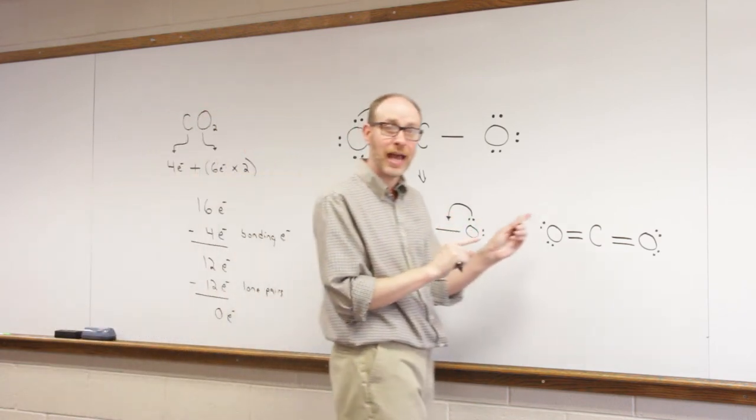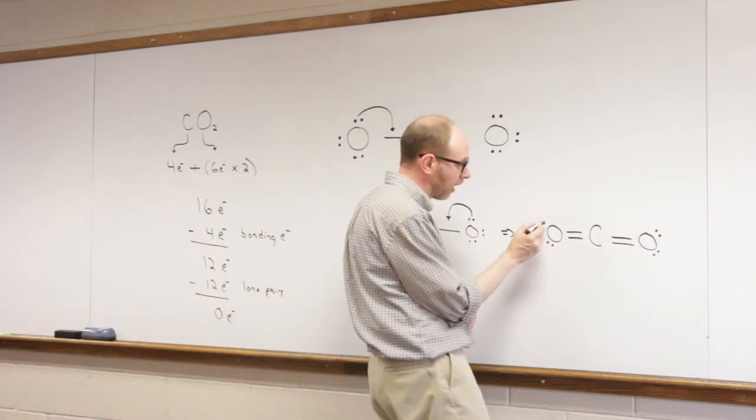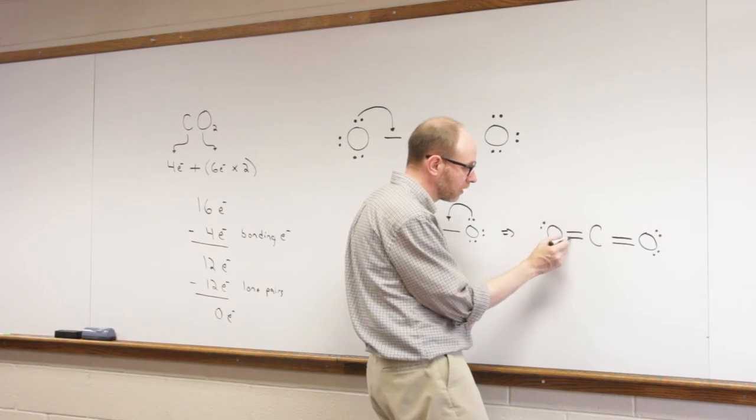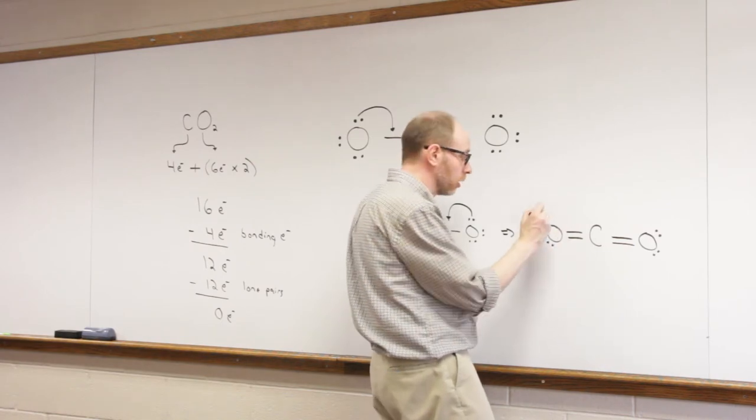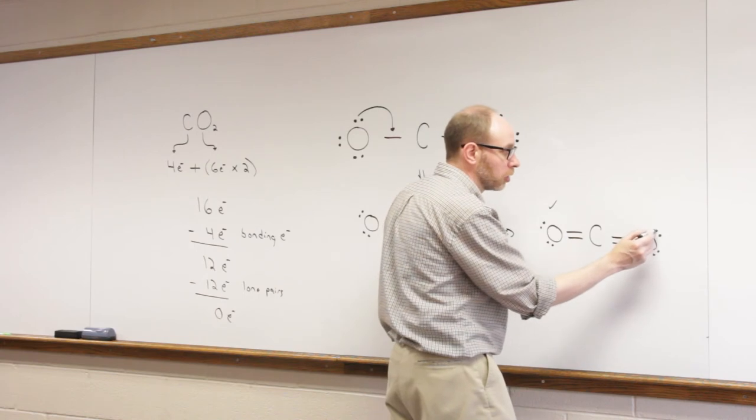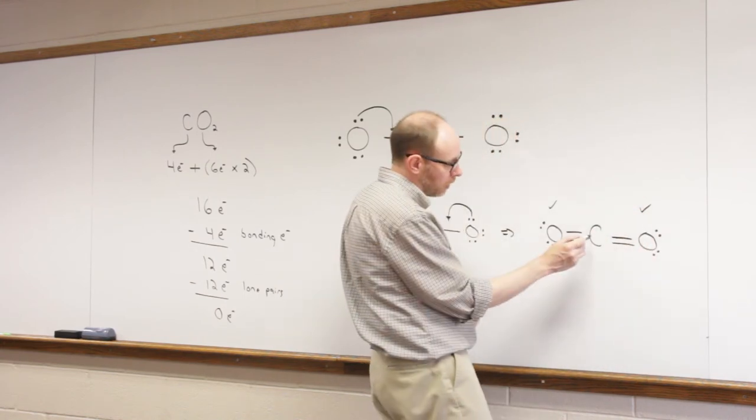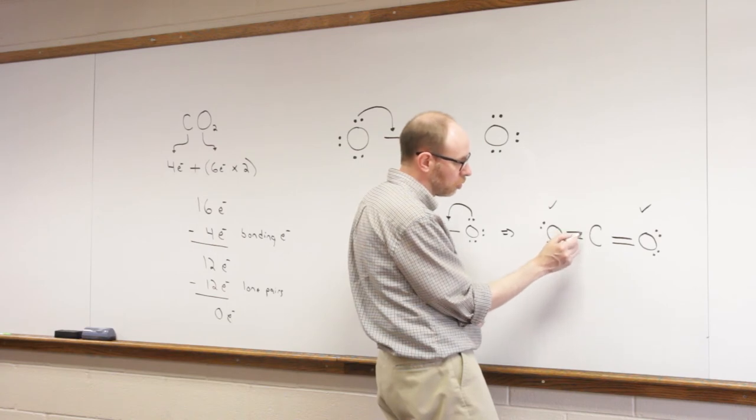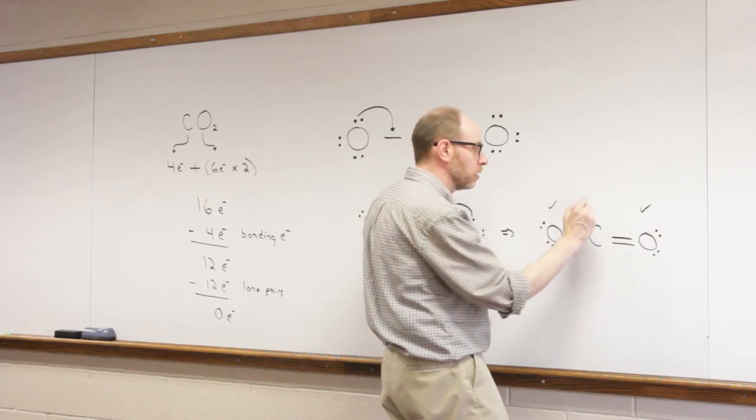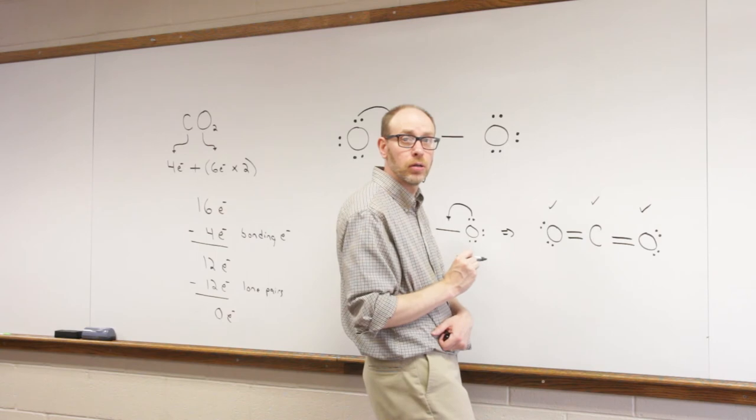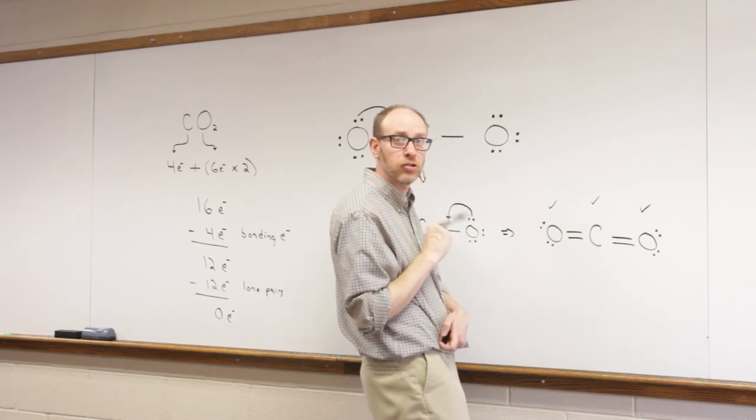Now, let's check octet. That was the problem before. Oxygen has 2, 4, 6, 8. Oxygen is good. Let's check the other oxygen. 2, 4, 6, 8. It's good. Now, let's check the carbon. 2, 4, 6, 8. It's good. We have a proper Lewis structure. All the octets are met.